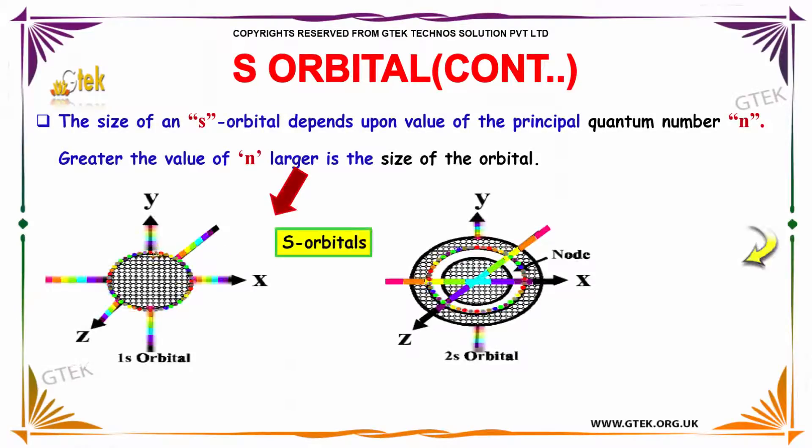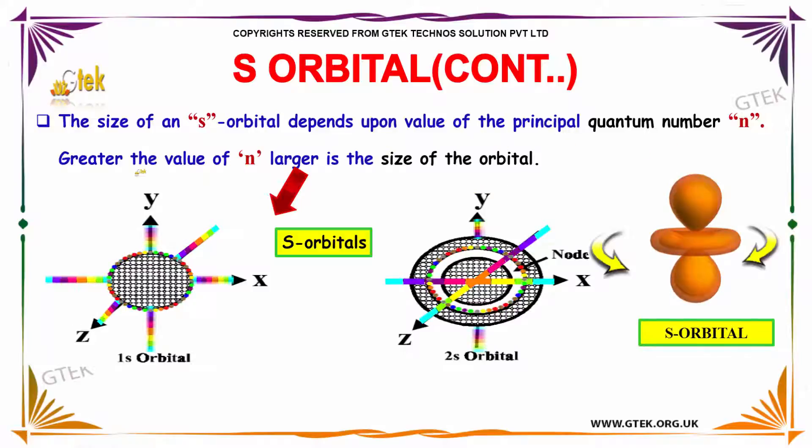The size of the S-orbital depends upon the value of the quantum number n. The greater the value of n, larger is the size of the orbital.